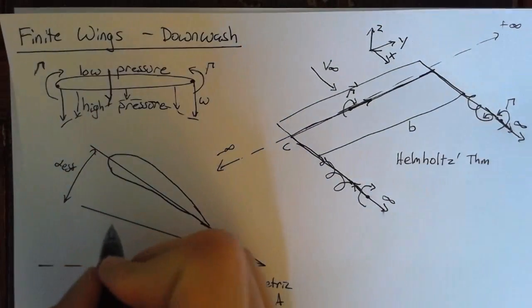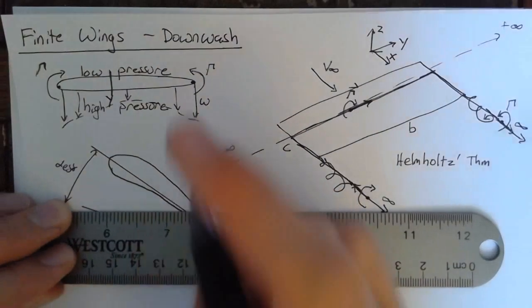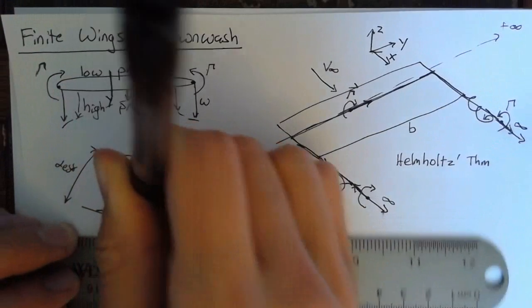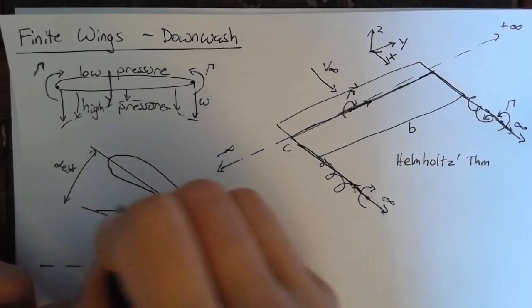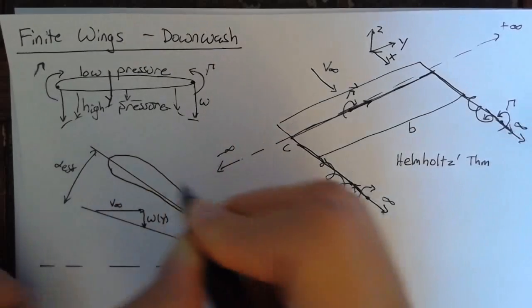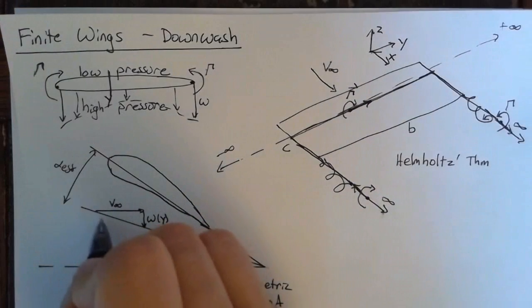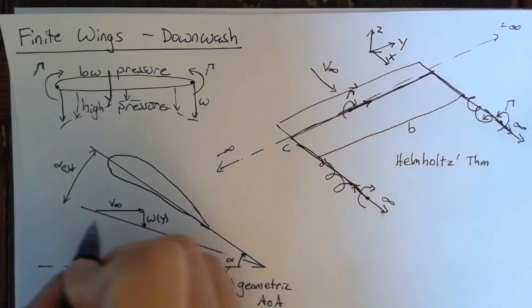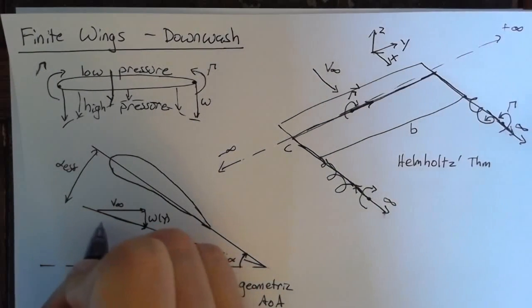Now, where does that come from? Well, we still have our uniform flow, which is aligned with the x-axis. But now we also have some downwash, which is a function of y. And this downwash changes the local velocity that the airfoil sees. So this line here is simply the local velocity. So we'll call this v-local.